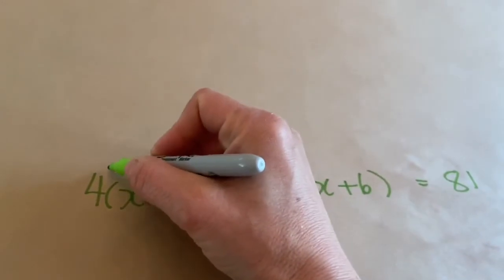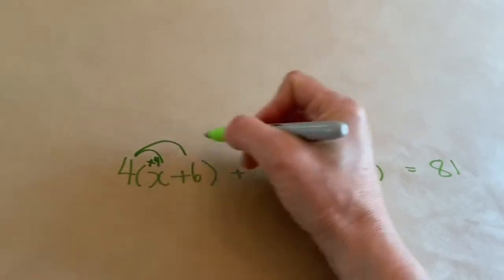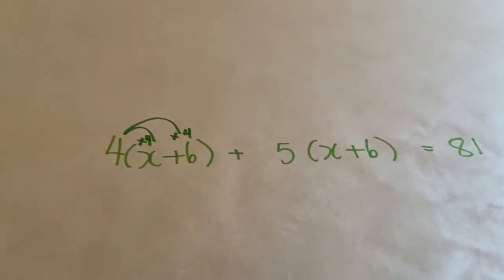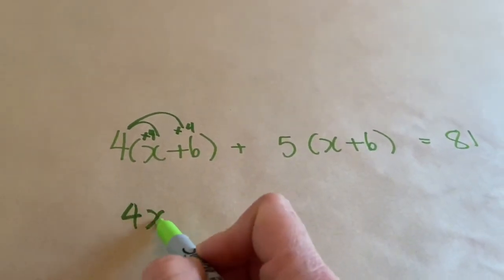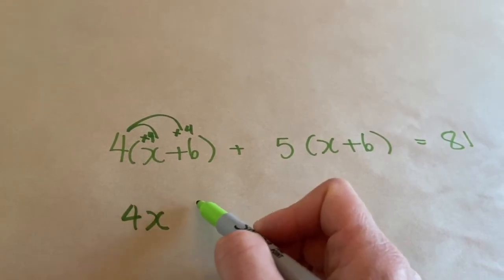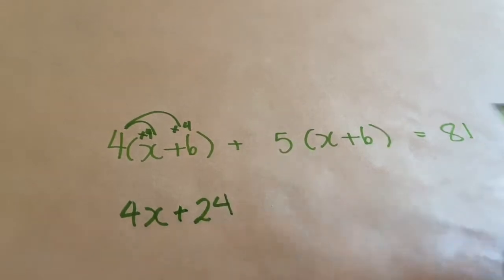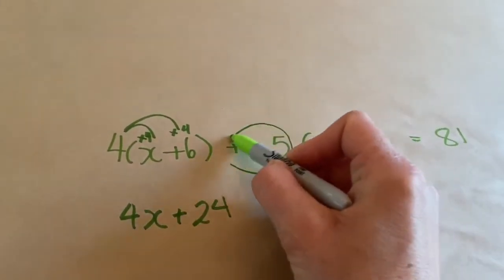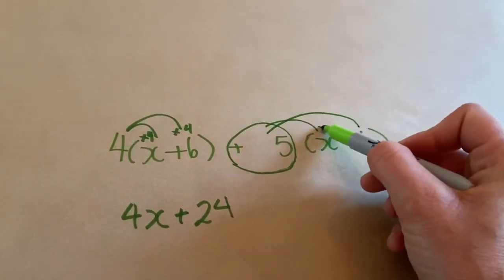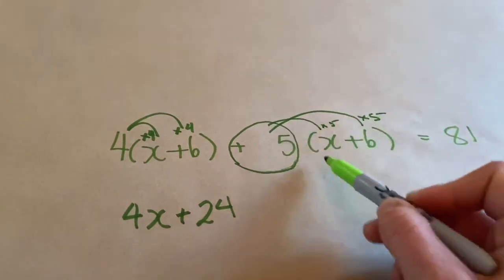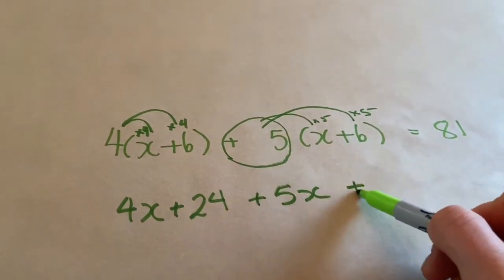Let's first get rid of the brackets. When I have a 4 on the outside of this bracket, it means I need to multiply everything inside by 4. So I have 4 times x, that means I would have 4x. And 4 times 6, that means I have 24. But don't forget, the calculator just says 24, but it means plus 24. Then I have plus 5 times x and plus 5 times 6. So 5 times x gives me plus 5x, and 5 times 6 gives me 30.